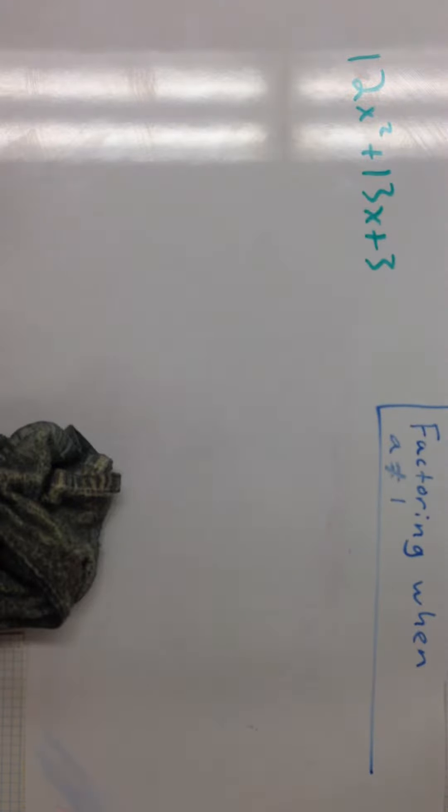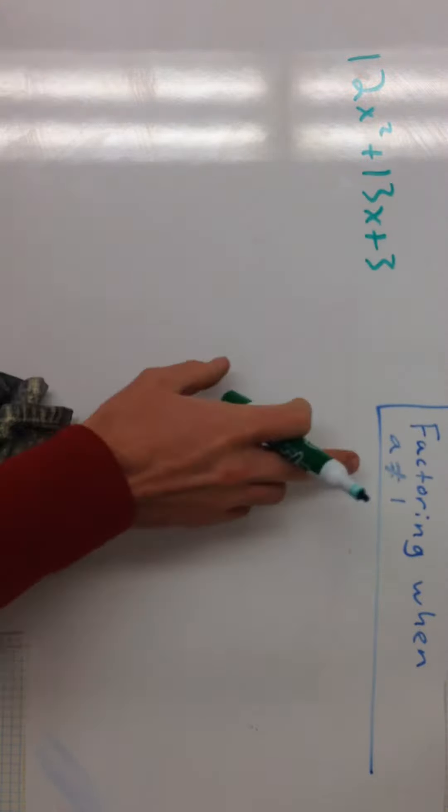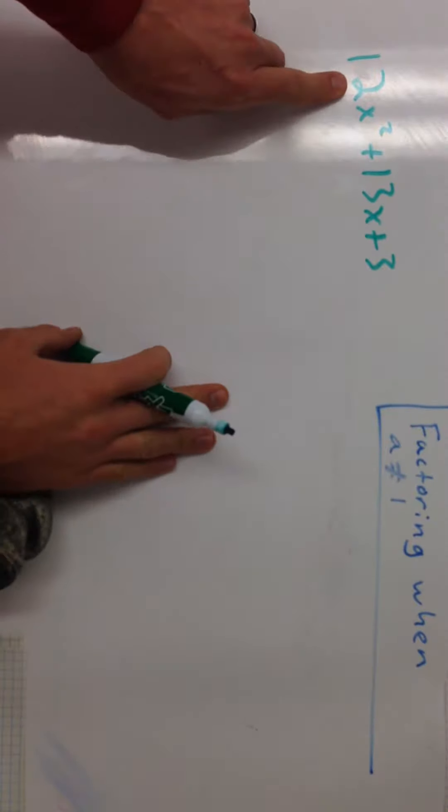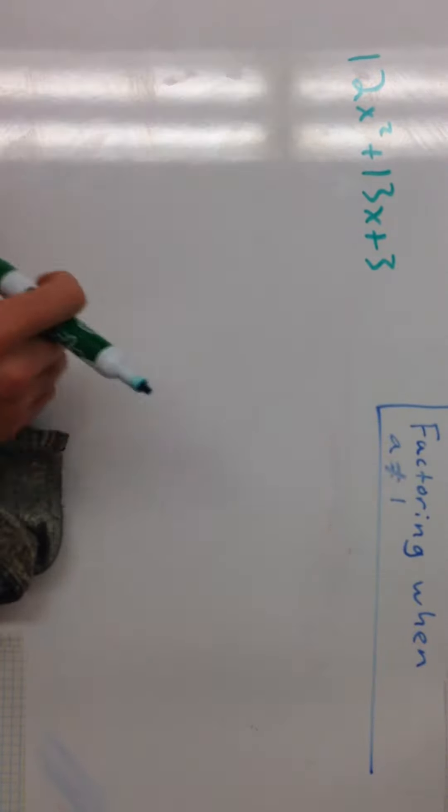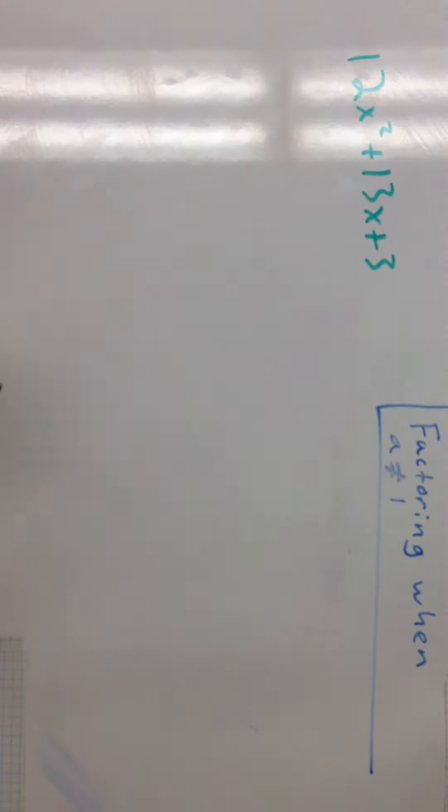It's time to get a little bit more complex with these. In this video, we're going to factor when A doesn't equal 1. So you notice this 12 out in front. That 12 is going to make this a far tougher problem. But we're not scared.